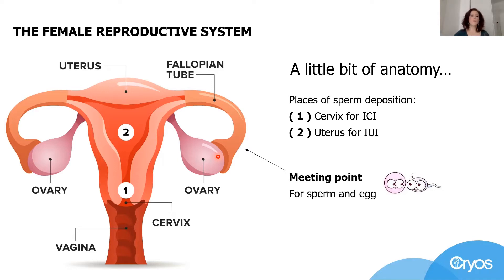When a woman conceives naturally, the sperm have to travel from the vagina through the cervix and to the uterus, and then up into the fallopian tubes. At the time of ovulation, when an egg is released into the fallopian tubes and sperm are already awaiting the egg there, they can meet, unite, and lead to fertilization.